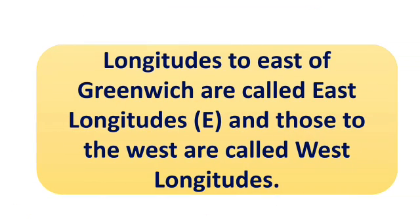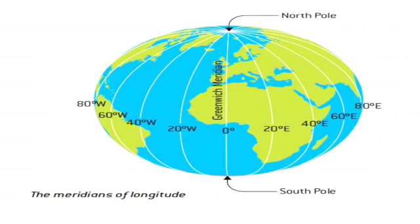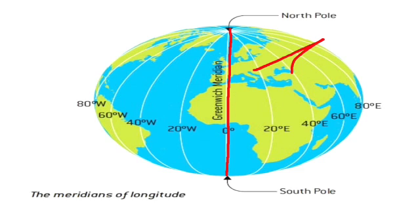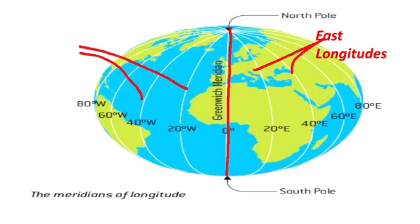Longitudes to the east of Greenwich are east longitudes and those to the west are west longitudes. In the picture, you can see the North Pole and South Pole. One straight line going through is known as the prime meridian at 0 degree longitude. The longitudes on the east side are known as east longitudes and those to the west of Greenwich are called west longitudes.